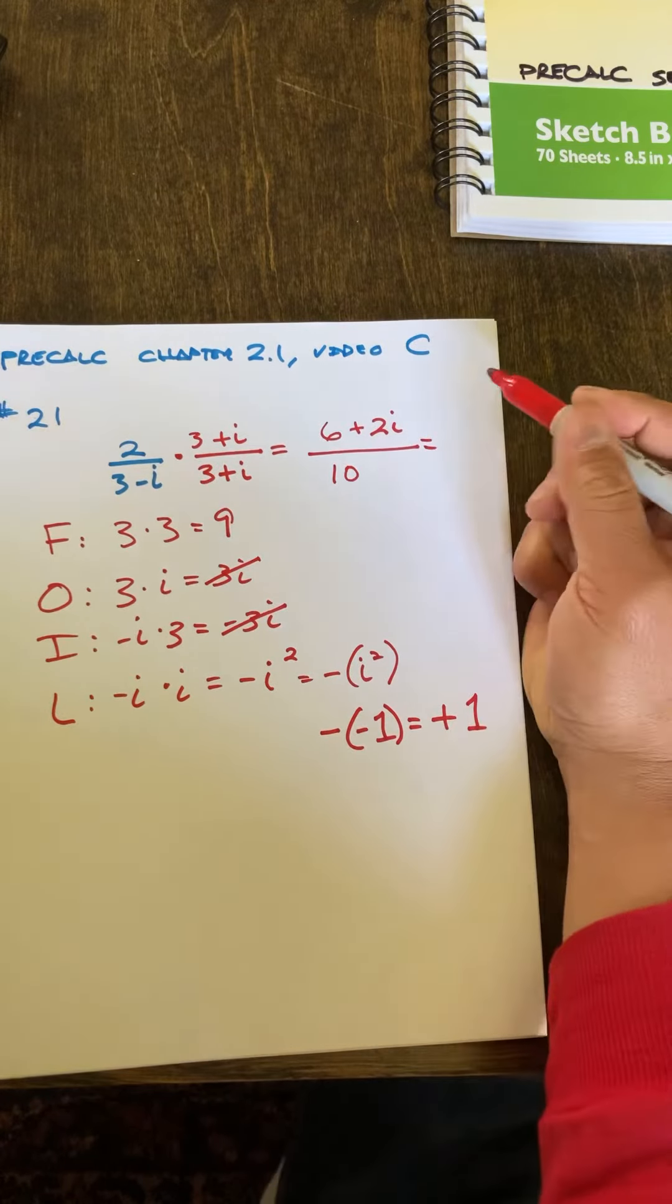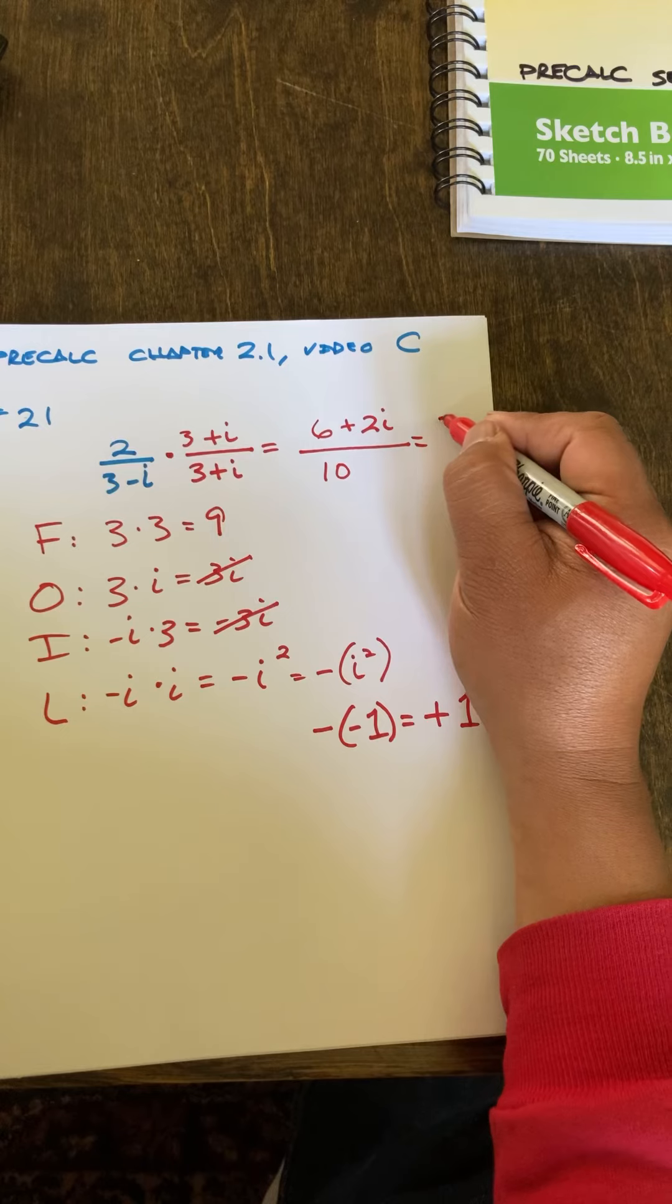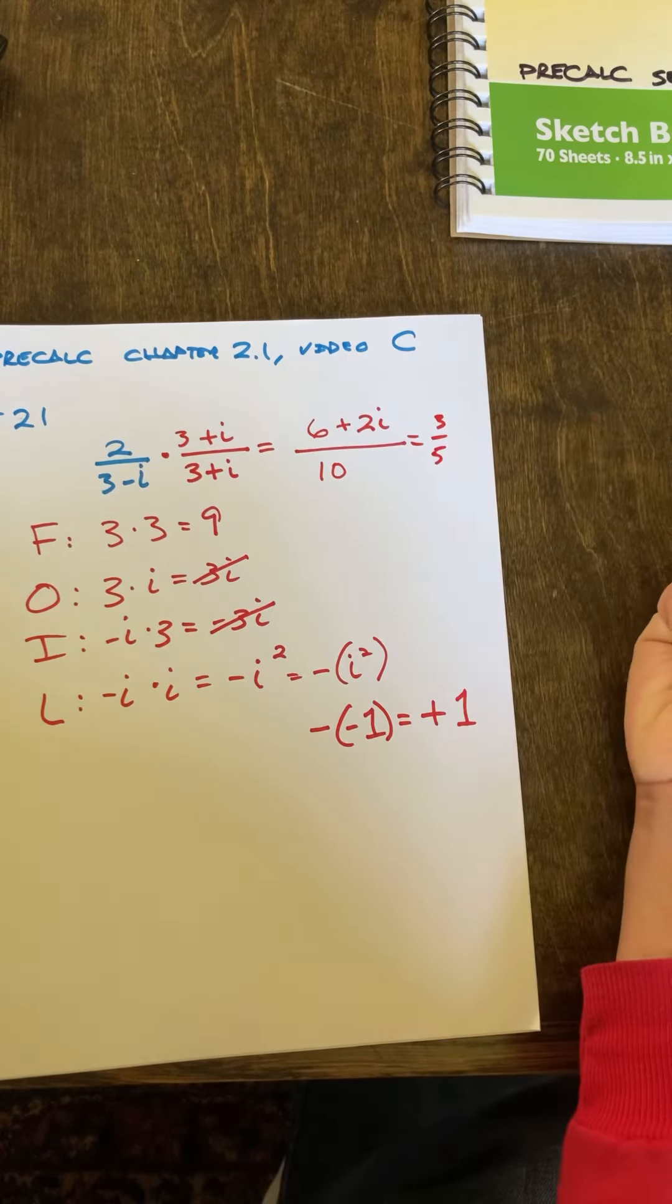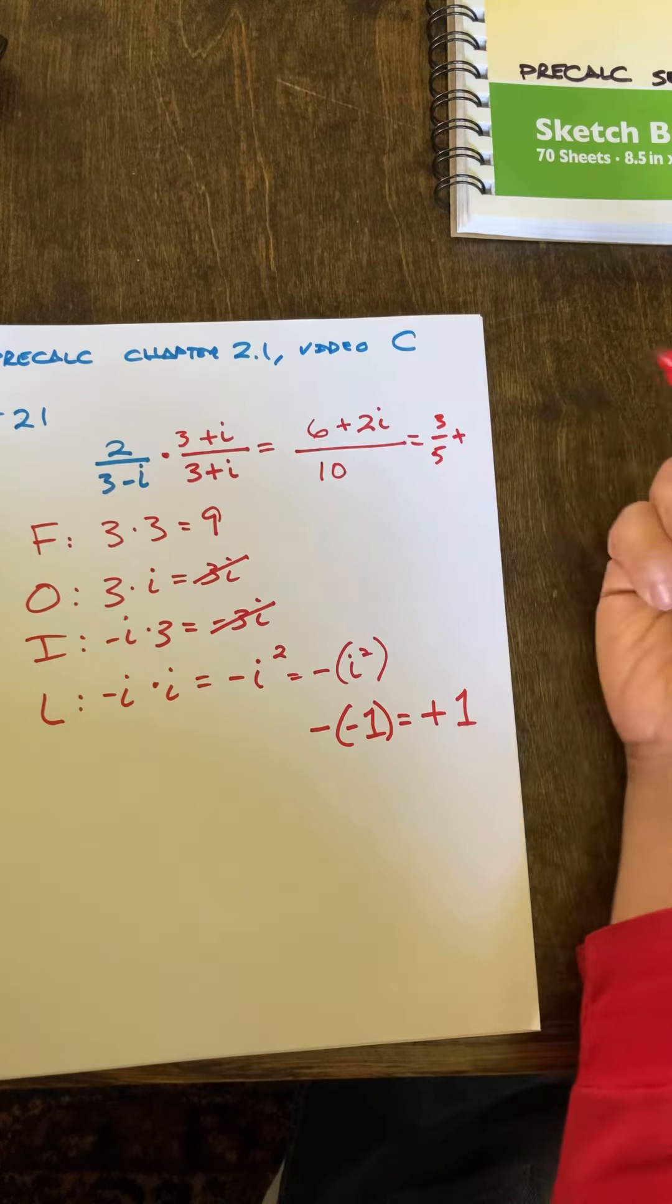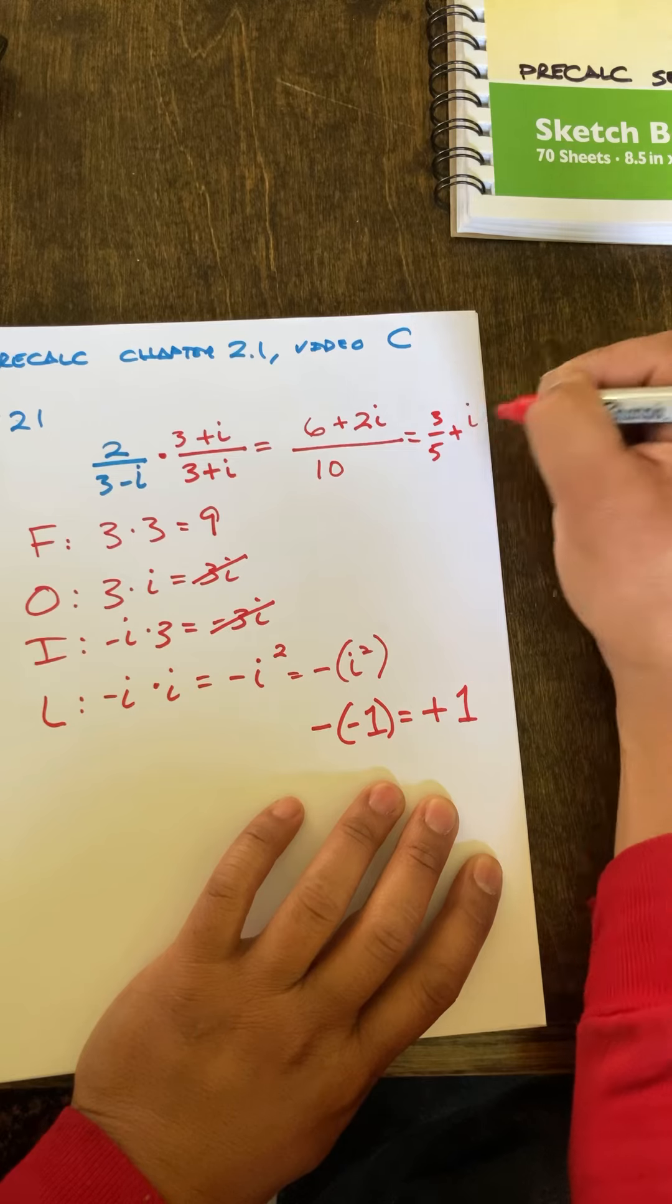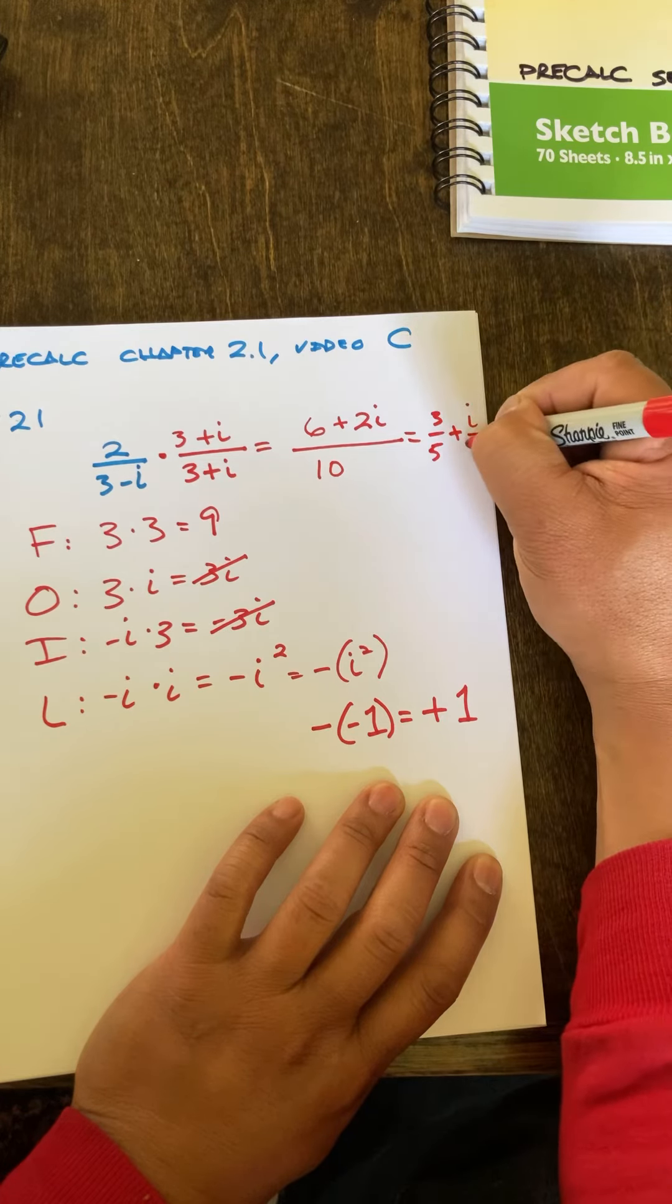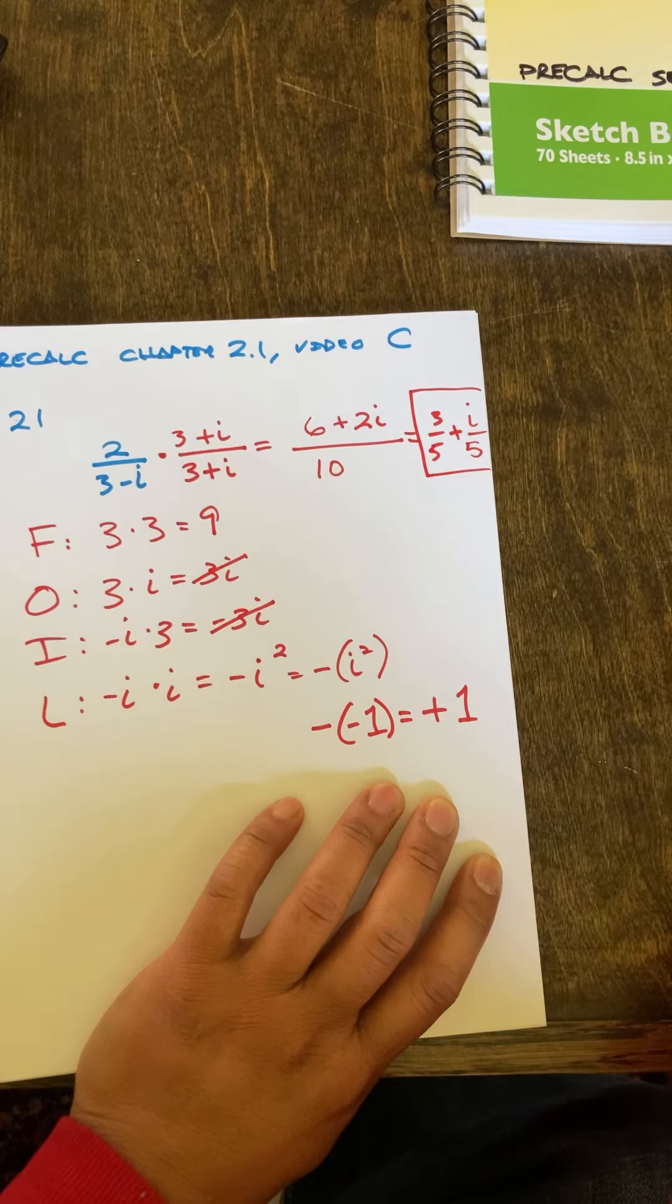And to rewrite that in standard form with the real part, 6 over 10 reduces to 3 fifths, plus 2 over 10 reduces to 1 fifth, which I'll write as i over 5. That's it.